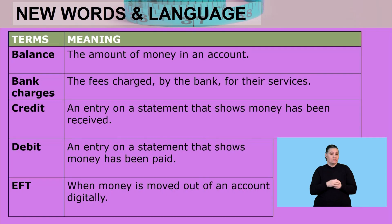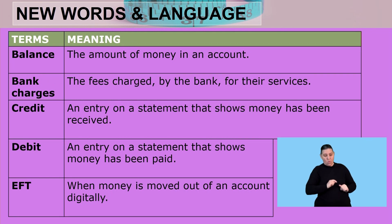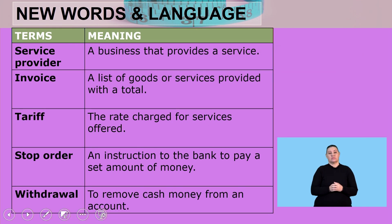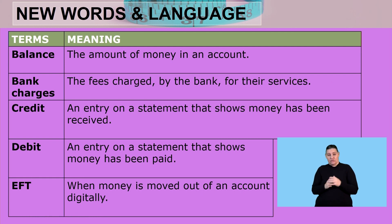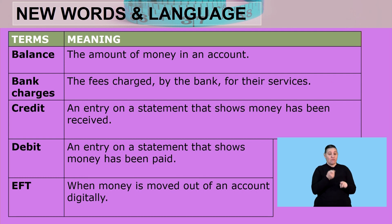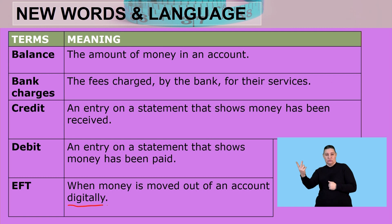New words and language for today: Balance — the amount of money in an account. Bank charges — the fees charged by the bank for their services; nothing's done for free. Credit — an entry on a statement that shows money has been received. Debit — an entry on a statement that shows money has been paid. EFT — when money is moved out of an account digitally, for example via a banking app.